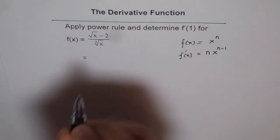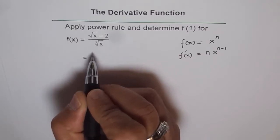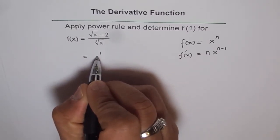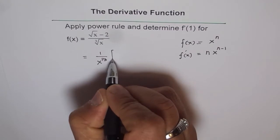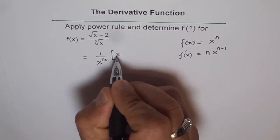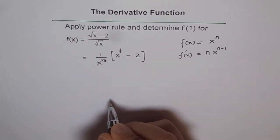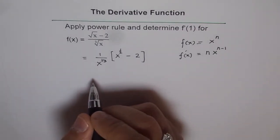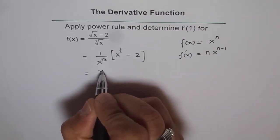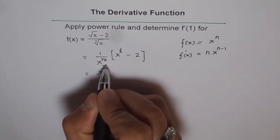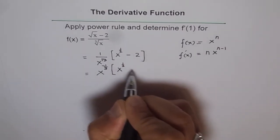We can rewrite using fractional powers. The third root of x is x to the power of 1/3, and in the brackets we have x to the power of 1/2 minus 2. Moving the denominator up, we write x to the power of minus 1/3, multiplied by the quantity x to the power of 1/2 minus 2.